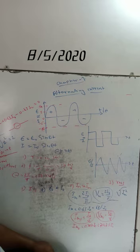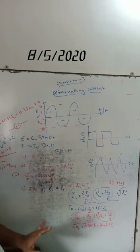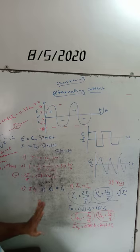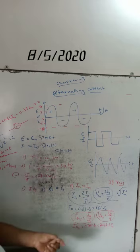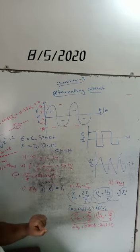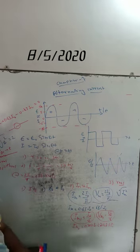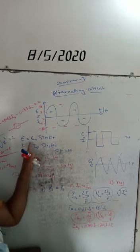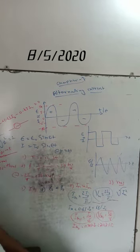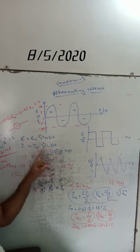Instantaneous value of AC: the induced EMF or current at a given instant or at a given interval of time is called the instantaneous value of AC. This can be determined using the formula: ε = ε₀ sin(ωt) and I = I₀ sin(ωt). This is the instantaneous value at time t.